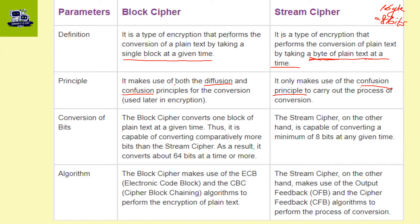Conversion of bits: block cipher converts one full block of plain text into cipher text and is capable of converting comparatively more bits than stream cipher — about 64 bits or more at a time. Stream cipher is capable of converting a minimum of 8 bits at a time.